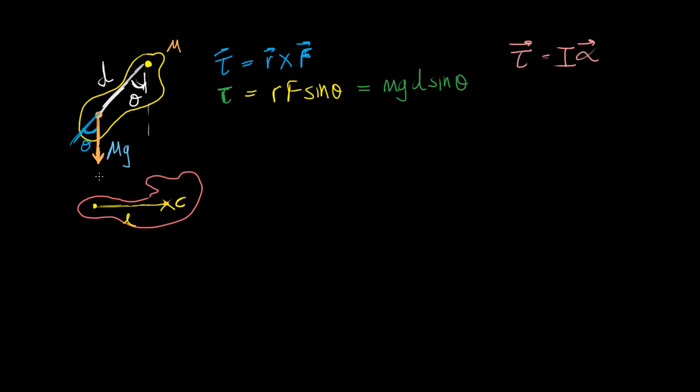Then you can say that, let me call this p, then the moment of inertia about p is equal to the moment of inertia about c, that is the center of mass, plus the mass of the body times the distance between p and c squared.